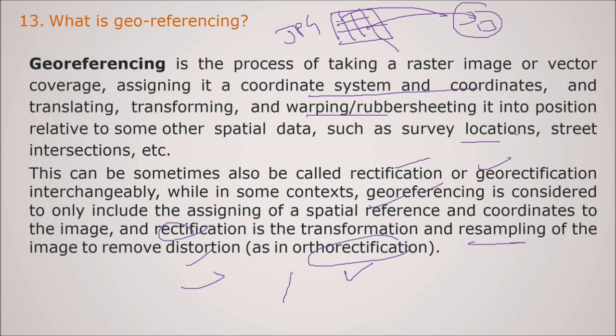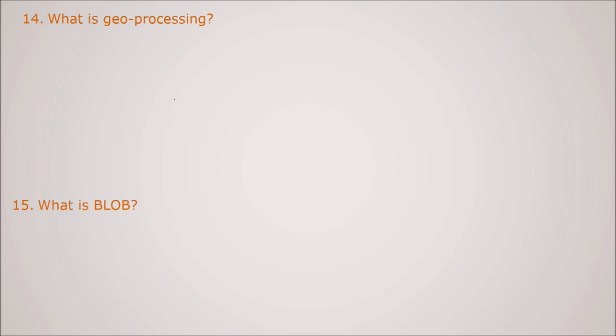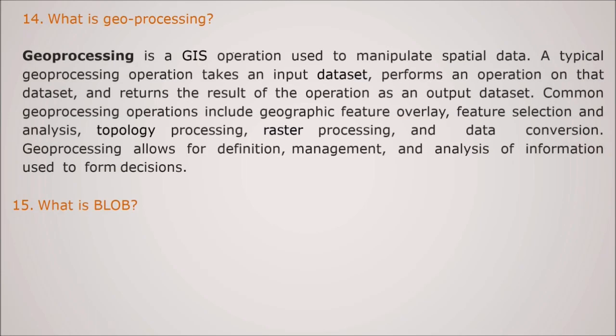What is geoprocessing? Geoprocessing is a GIS operation used to manipulate the spatial data, spatial data and any data related to the space or locations. So a typical geoprocessing operation takes an input data set, performs an operation on that data set and returns the result of the operation to an output data set. The common geoprocessing operation includes the geographic feature overlay, feature selection and analysis, topology processing, raster processing and data conversion. Geoprocessing allows for definition management analysis of information used to form the decisions.